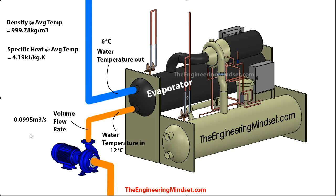For the metric calculation, we're going to assume that this pump is providing water at 0.0995 meters cubed per second, and that the return water coming from the building — from the AHUs, fan coil units, etc. — is entering the evaporator at 12 degrees Celsius and leaving at 6 degrees Celsius. The density of the water at the average temperature of 9°C is 999.78 kilograms per meter cubed, and the specific heat capacity is 4.19 kilojoules per kilogram per Kelvin.